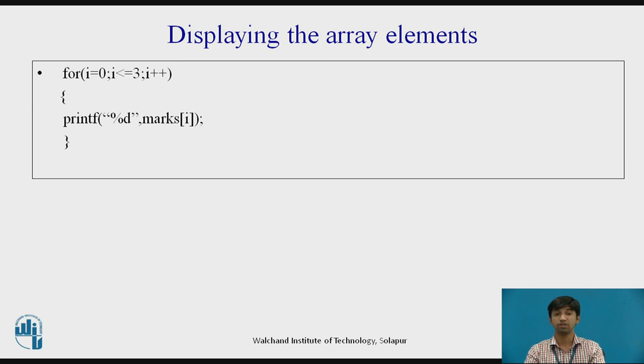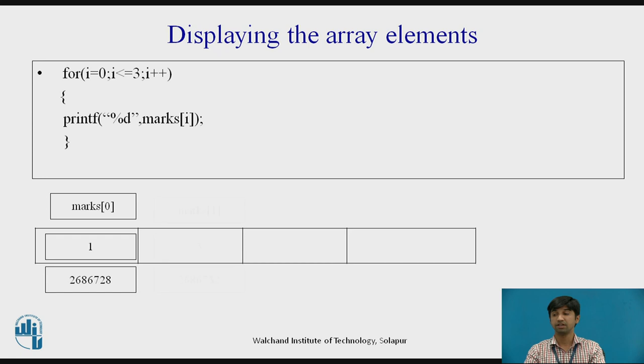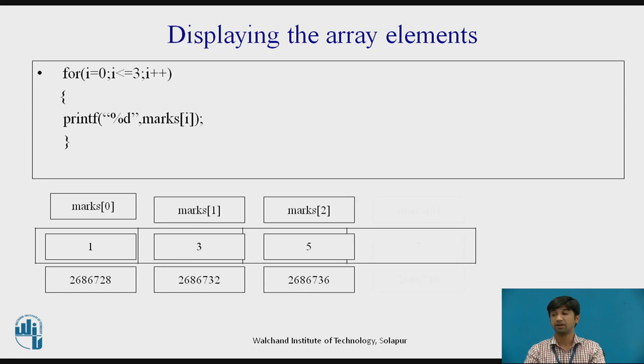But now the body of the loop causes each marks to be displayed until i equals 3. It means first the printf is like for i equal to 0, 0 is less than or equal to 3. So marks of 0 will be displayed. That is 1 will be displayed.